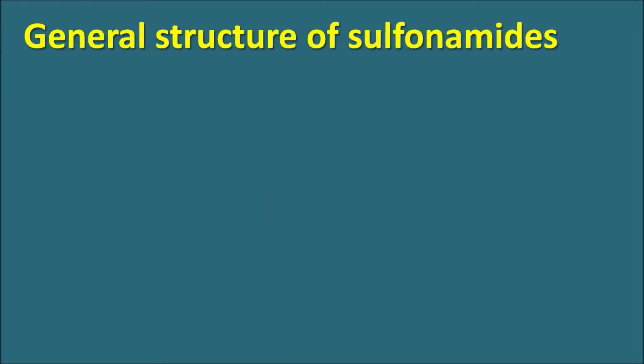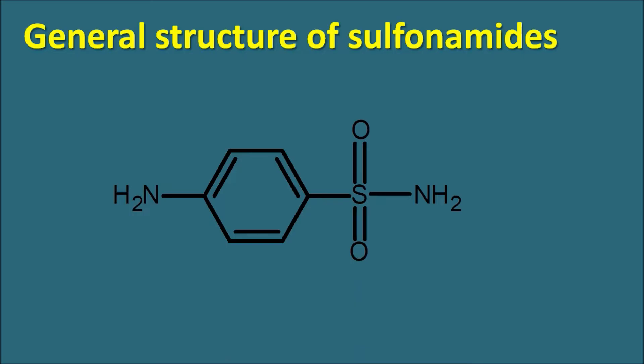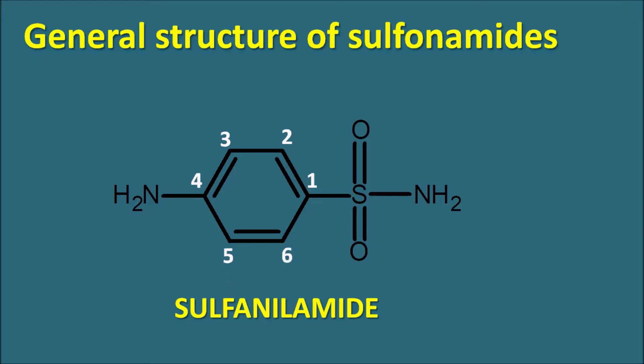Today we will discuss the SAR (Structure-Activity Relationships) of sulfonamides. The general structure of a simple sulfonamide is the sulfonylamide, where the benzene ring is attached with the sulfonamide group. Numbering the ring one through six, the sulfonamide is at position one and the amine group at position four. Within the structure we can observe two nitrogens: the amine nitrogen and the amide nitrogen.